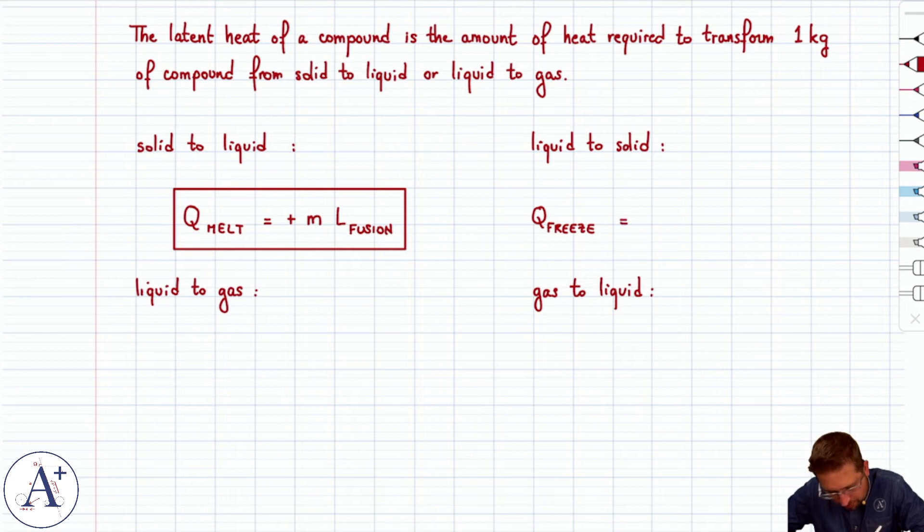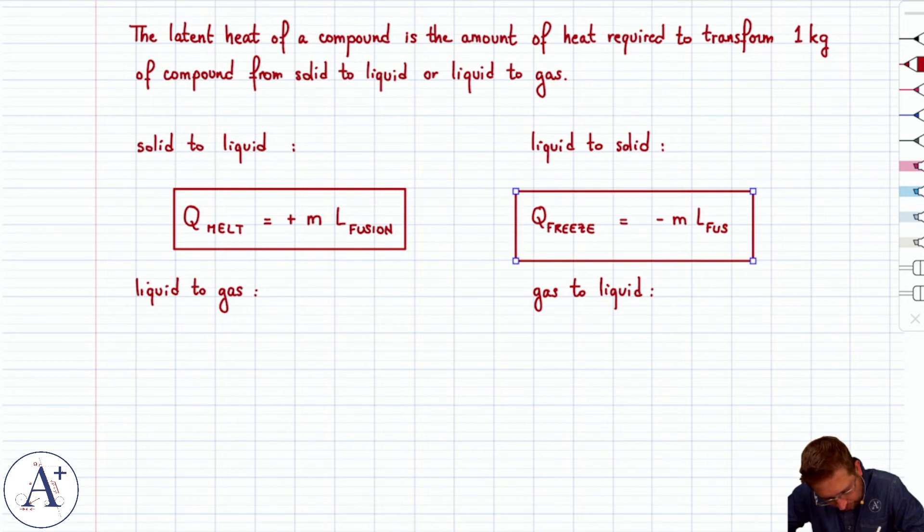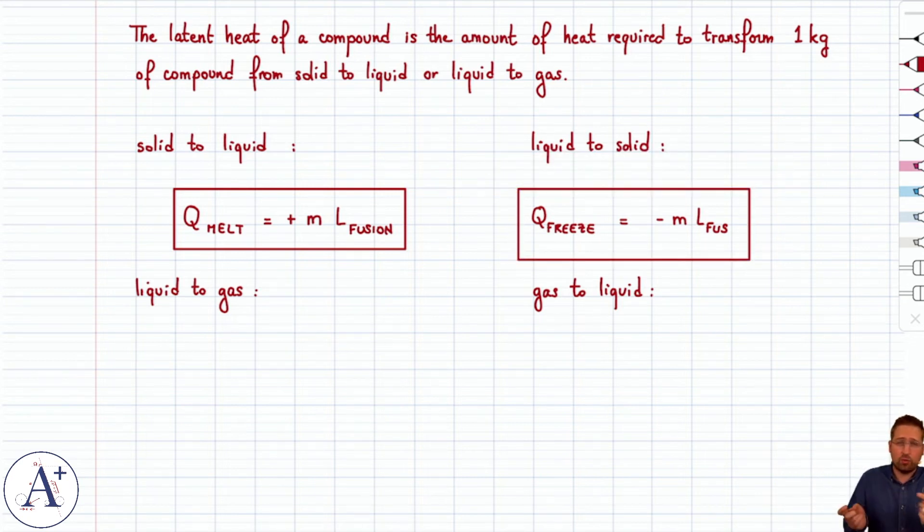Now, it turns out the amount of heat that you have to remove is exactly the opposite amount that you had to provide to melt it. So it's minus, because it's a loss to the system, m times L fusion. And so, well, first of all, it's remarkable that it's the same amount in magnitude one way or the other.